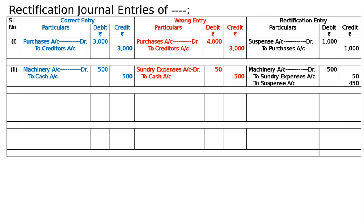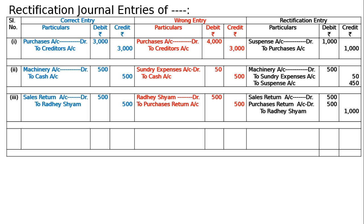The third entry: goods returned by Radheshyam were entered in the purchase returns book instead of the sales returns book. The correct entry should be sales returns account debited to Radheshyam five hundred. The wrong entry was Radheshyam debited to purchase returns. The rectifying entry: sales returns account debited five hundred, purchase returns account debited five hundred, and Radheshyam credited one thousand. Being sales returns entered in purchase returns book, now rectified.